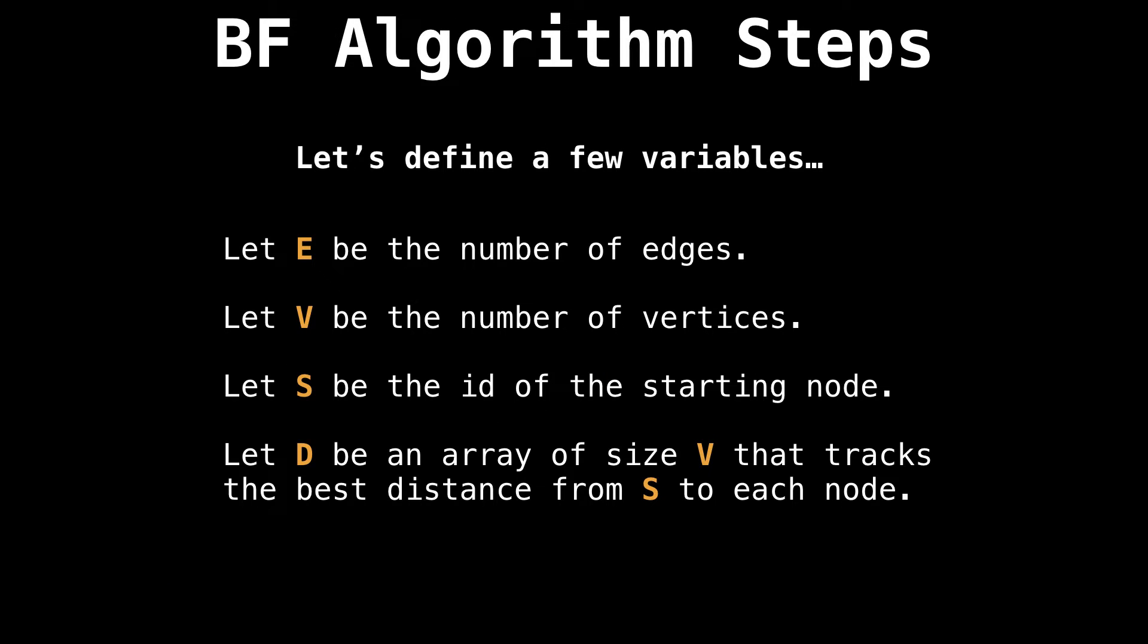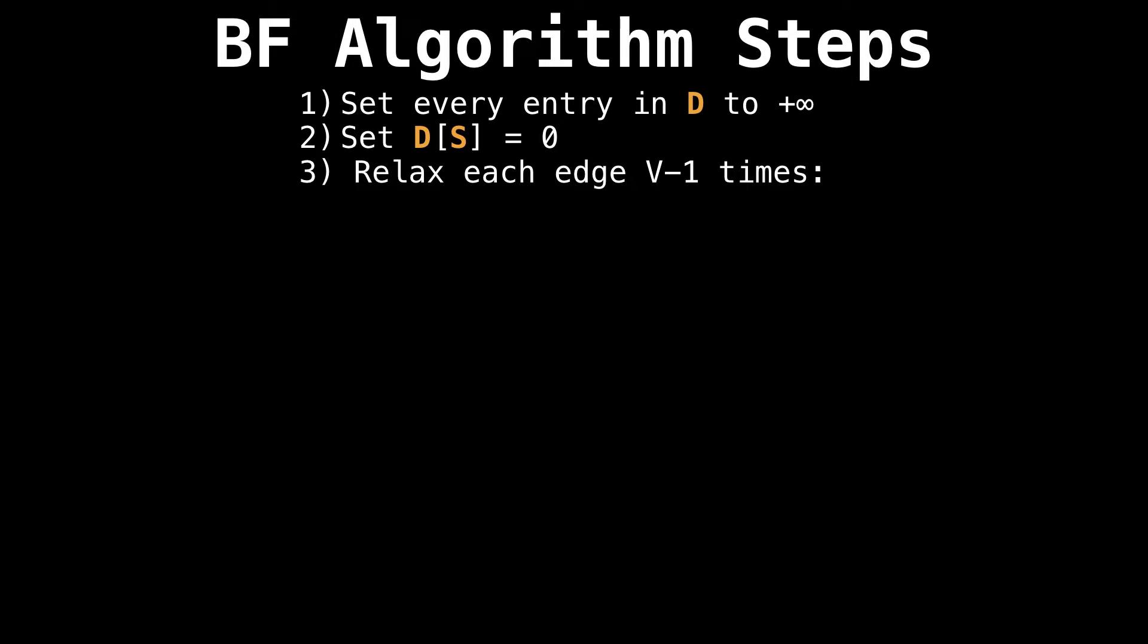Now let's look at the actual steps involved in the Bellman-Ford algorithm. First, we'll need to define a few variables. Let E be the number of edges in the graph. Let V be the number of vertices. Let s be the ID of the starting node. In this case, s is short for start. And lastly, let D be an array of size V that tracks the best distance from s to each node. The first thing we'll want to do is set every entry in D to positive infinity. This is because the distance to each node is initially unknown. Next, we'll want to set the distance to the starting node to be zero because we're already there.